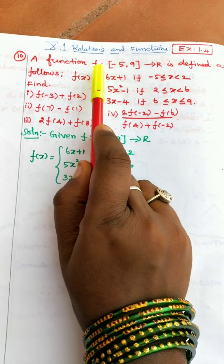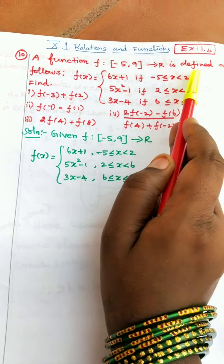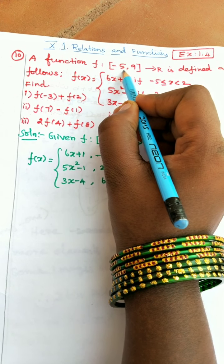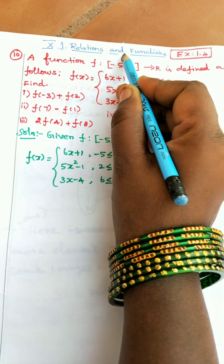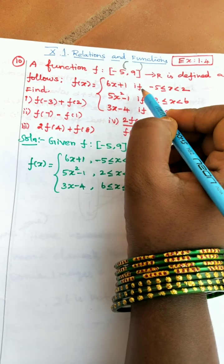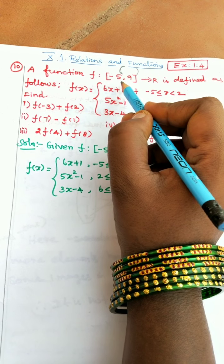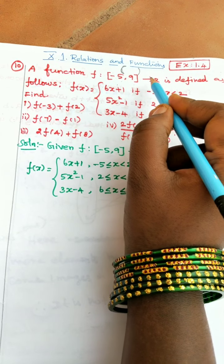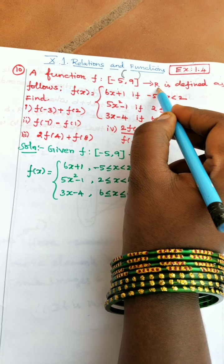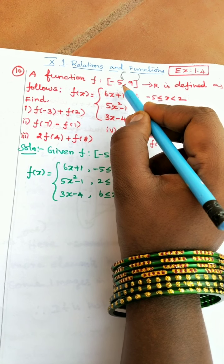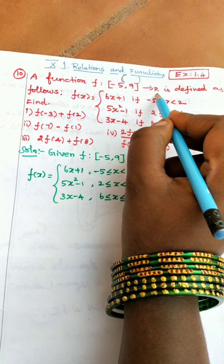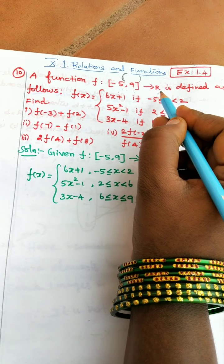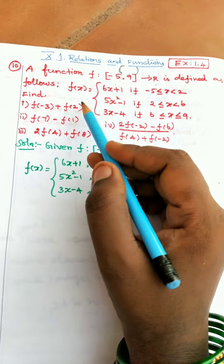A function f from [-5, 9] to R — R means real numbers. The closed bracket means including that number. So from minus 5 to 9, the function maps to real numbers. The domain is from minus 5 to 9, and the codomain is real numbers, because the answer can be positive, zero, or negative.